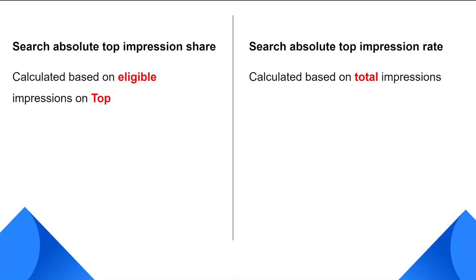This is the summary of the difference between the two. Impression share is calculated based on your eligible impressions, and impression rate is calculated based on your total impressions. I hope now you've learned about the difference between the two absolute top and top impression share and rate that you see in your account.